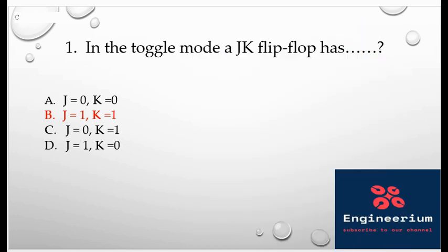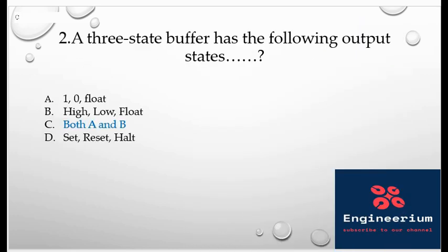And now moving to the other MCQ. A three-state buffer has the following output states: one, zero, and float; high, low, float; and both A and B; set, reset, halt. So here we have all four options. So basically the three states are one, zero, and float, and high and low is also same thing in option B. So here the answer will be option C because a three-state buffer when enabled output is high and is low. When disabled, enables is high, disables is low, and neither of these conditions then it will be in the float condition.